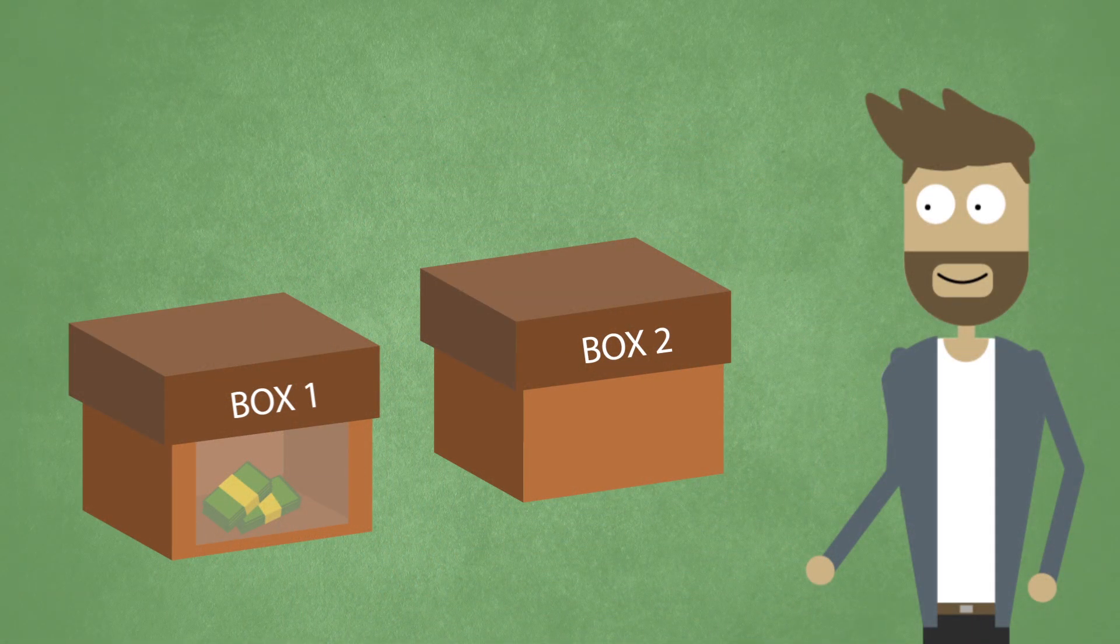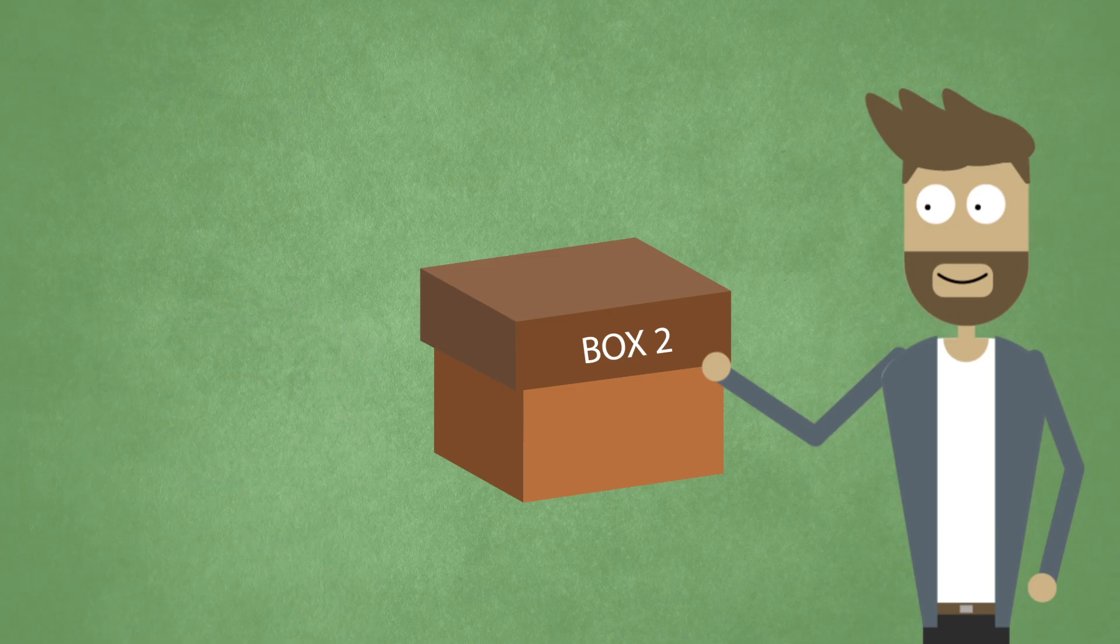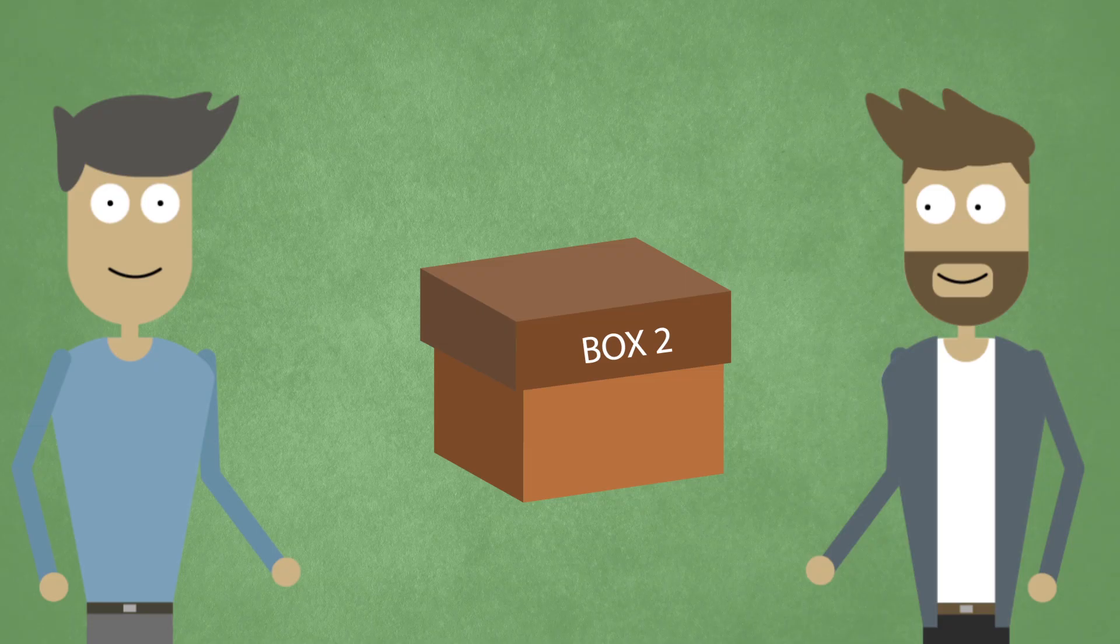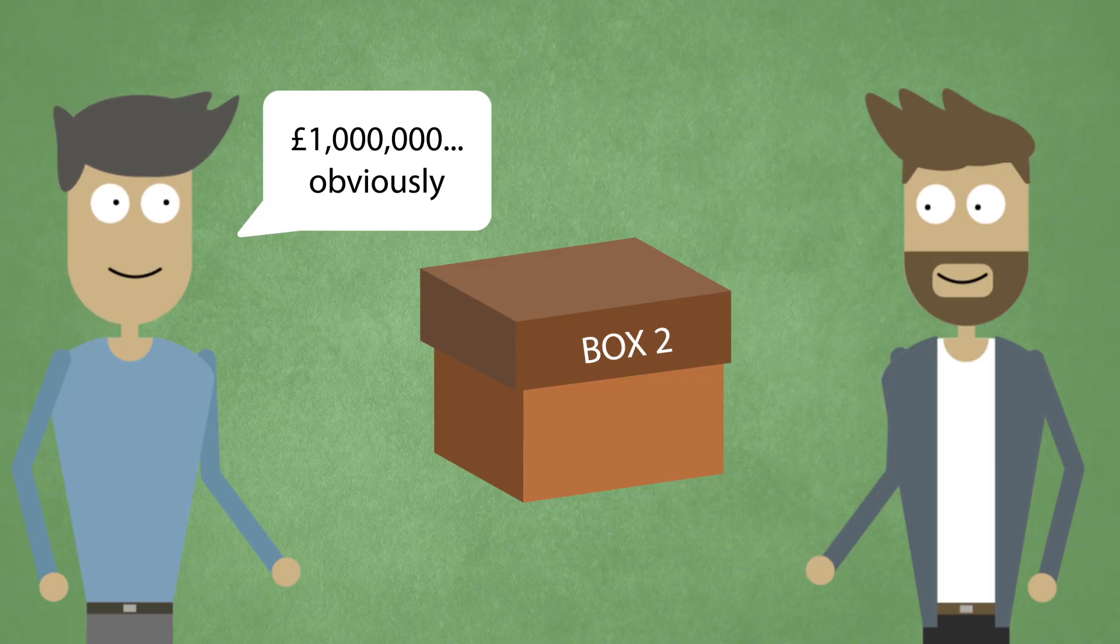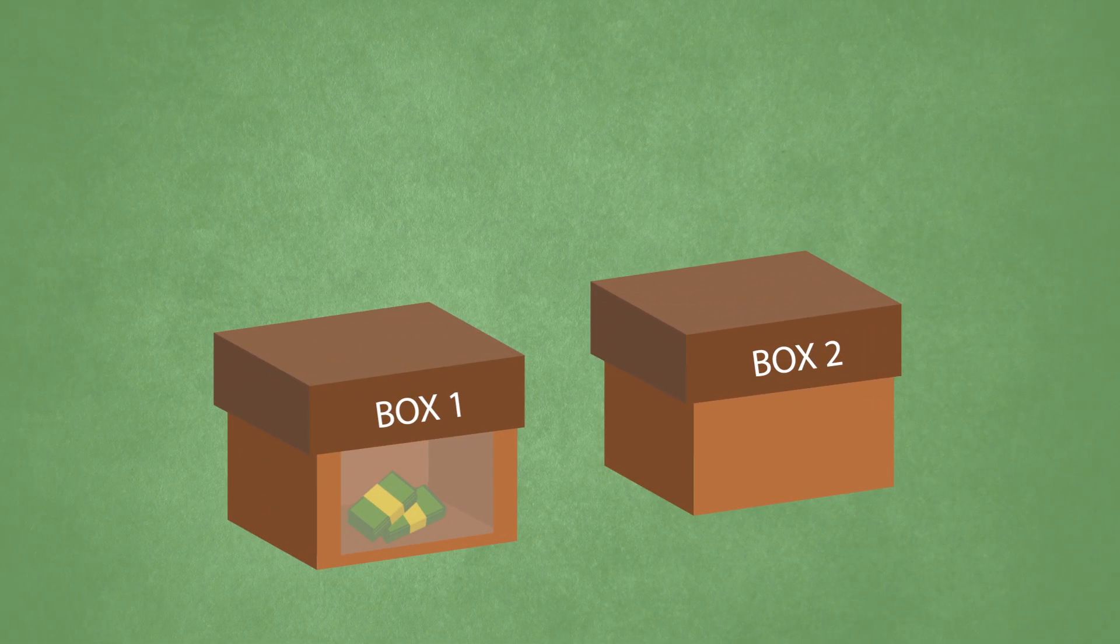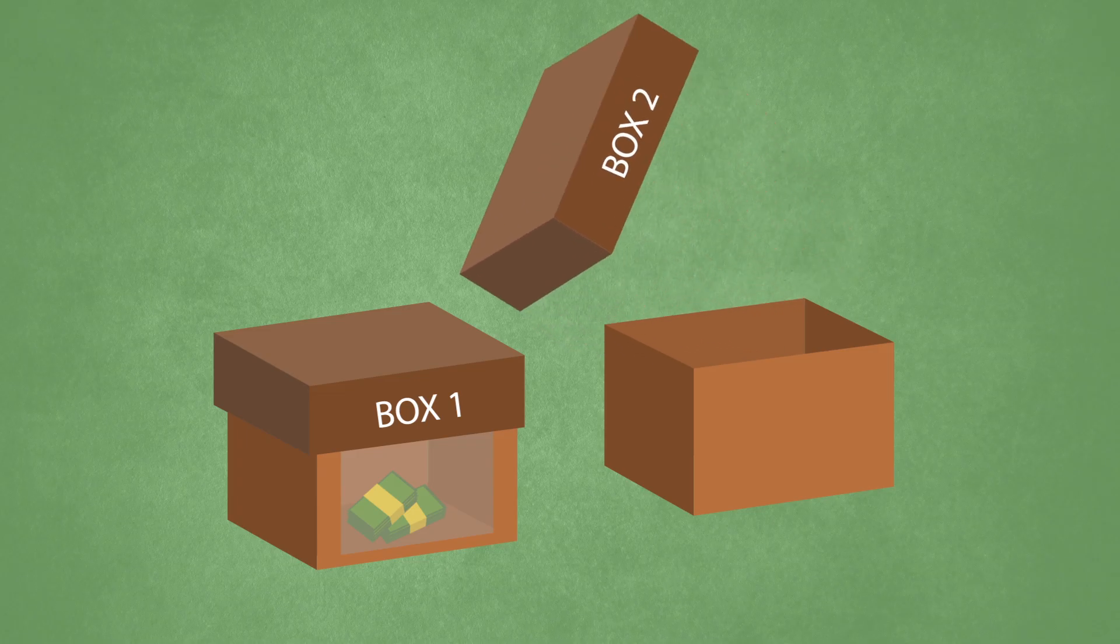Suppose your friend is taking the experiment and chooses to open just the second box. But before the box is opened, you are asked to place a bet on whether there will be a million pounds inside. Given the success of the supercomputer in correctly predicting the outcome in hundreds of previous tests, you would surely bet that inside the box was a million pounds. Likewise, if your friend chose to open both boxes, wouldn't you bet that box two is empty?